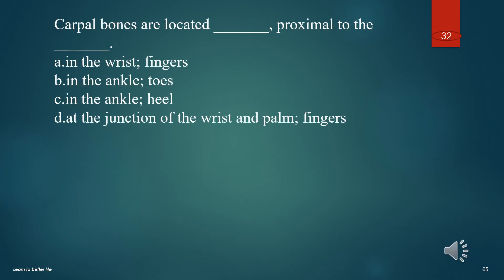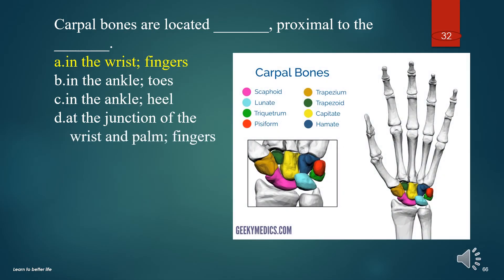Carpal bones are located where, proximal to the what? A. In the wrist, fingers. B. In the ankle, toes. C. In the ankle, heel. D. At the junction of the wrist and palm, fingers. The answer is A. In the wrist, fingers.